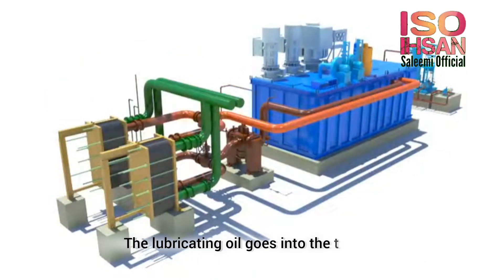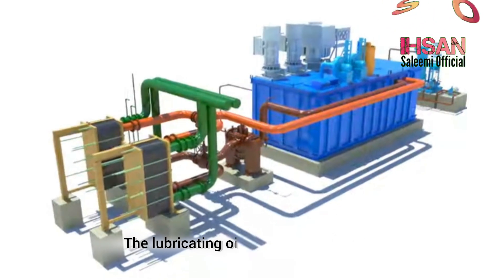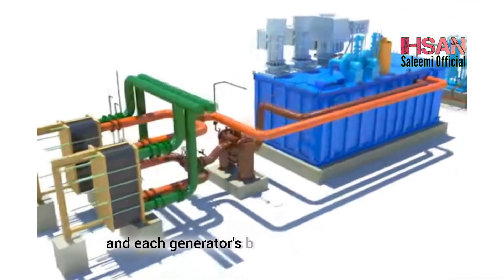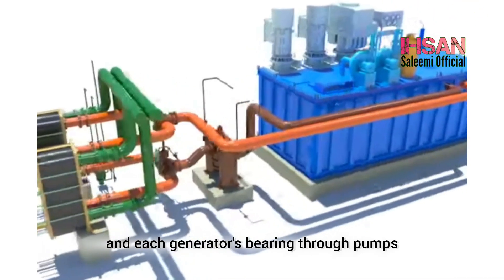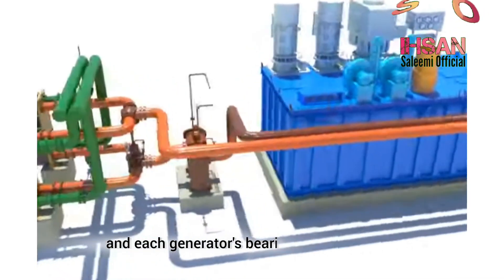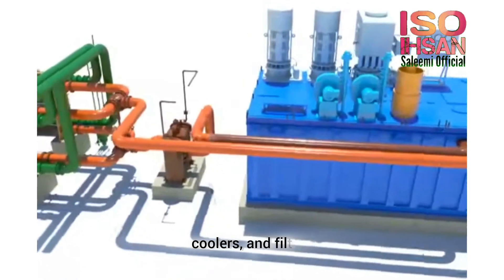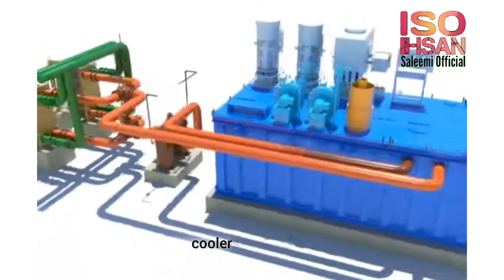The lubricating oil goes into the turbine and each generator bearing through pumps, coolers, and filters.